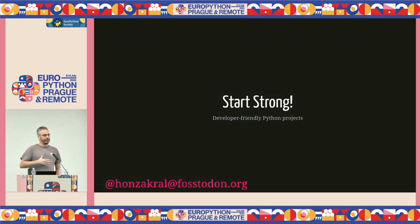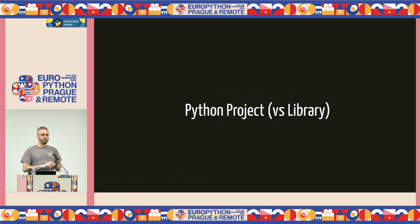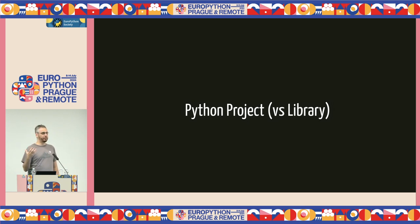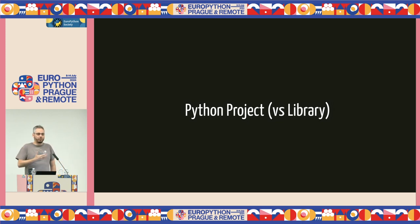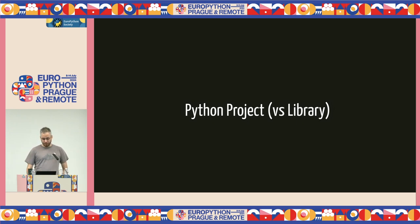We're going to be creating together a template of a project — an empty project — and putting in all the different tools that we need, not only for Python itself, but also things around it. We're going to be focusing more on building a project, something that actually uses Python to do things. We're not that much going to focus on creating a library and publishing it to PyPI. This is more towards: I want to write a website, some scripts for myself, my team, my company, and I want to run it eventually.